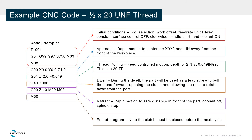This is a sample program written for half-inch 20 UNF threads. The first three lines establish initial conditions, including tool number, offset, feed rate units, constant surface speed off, clockwise spindle start, and coolant on.